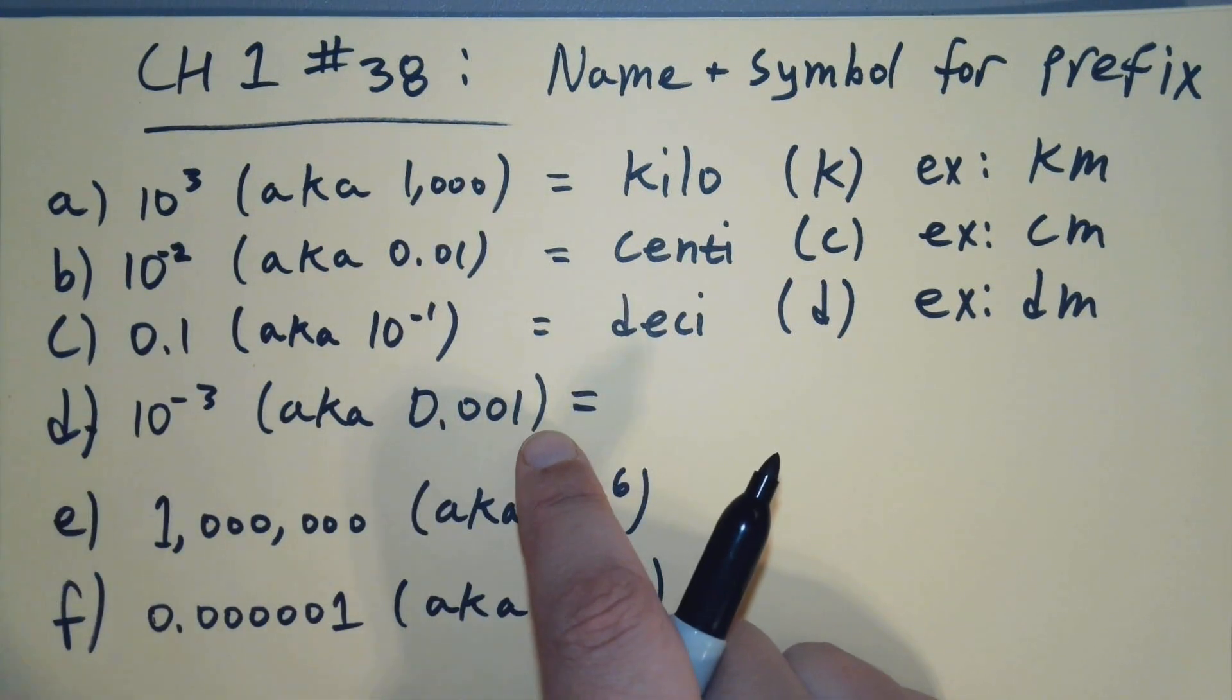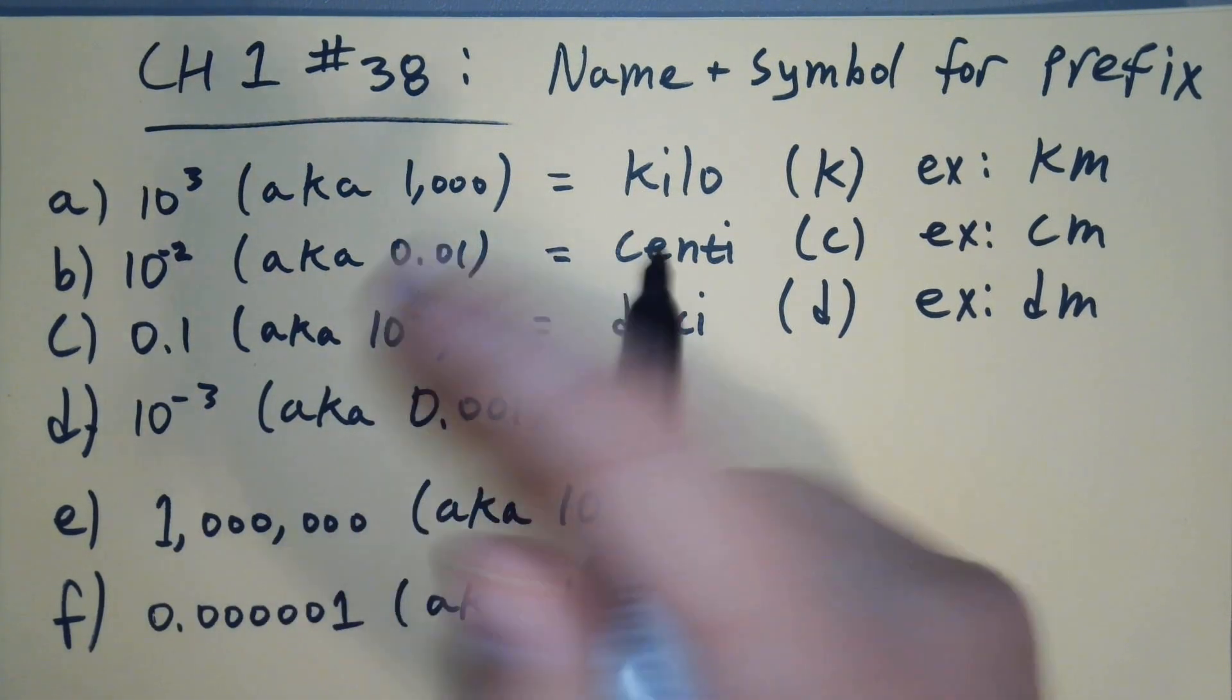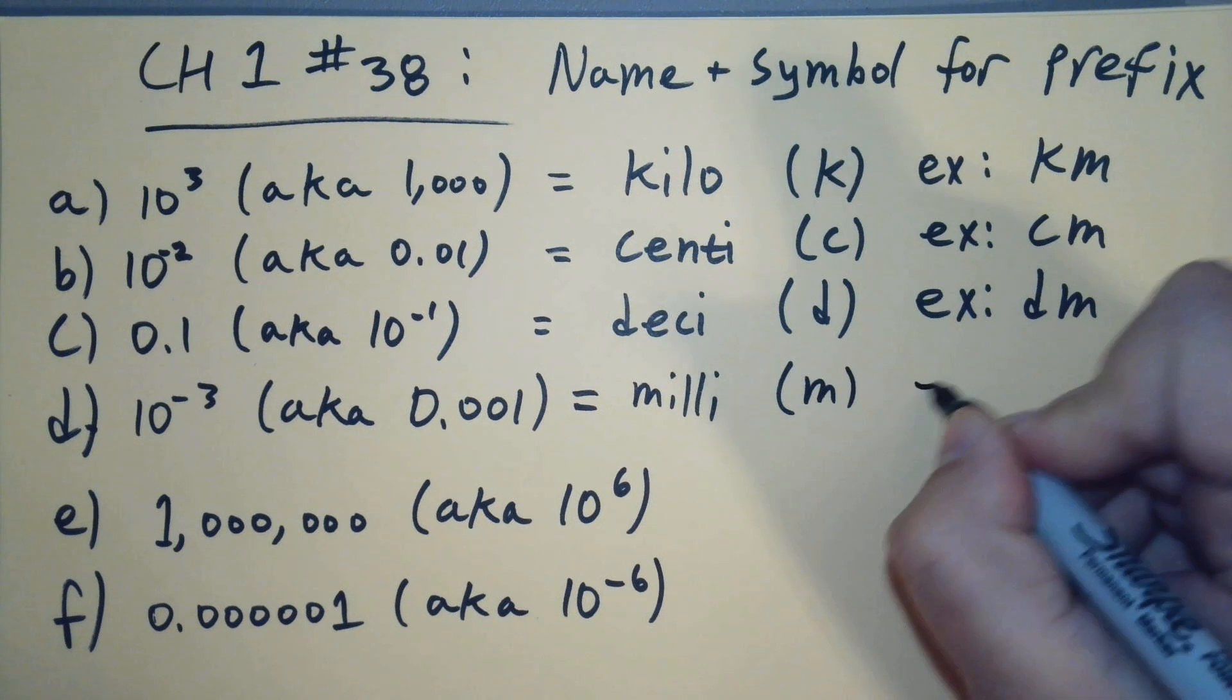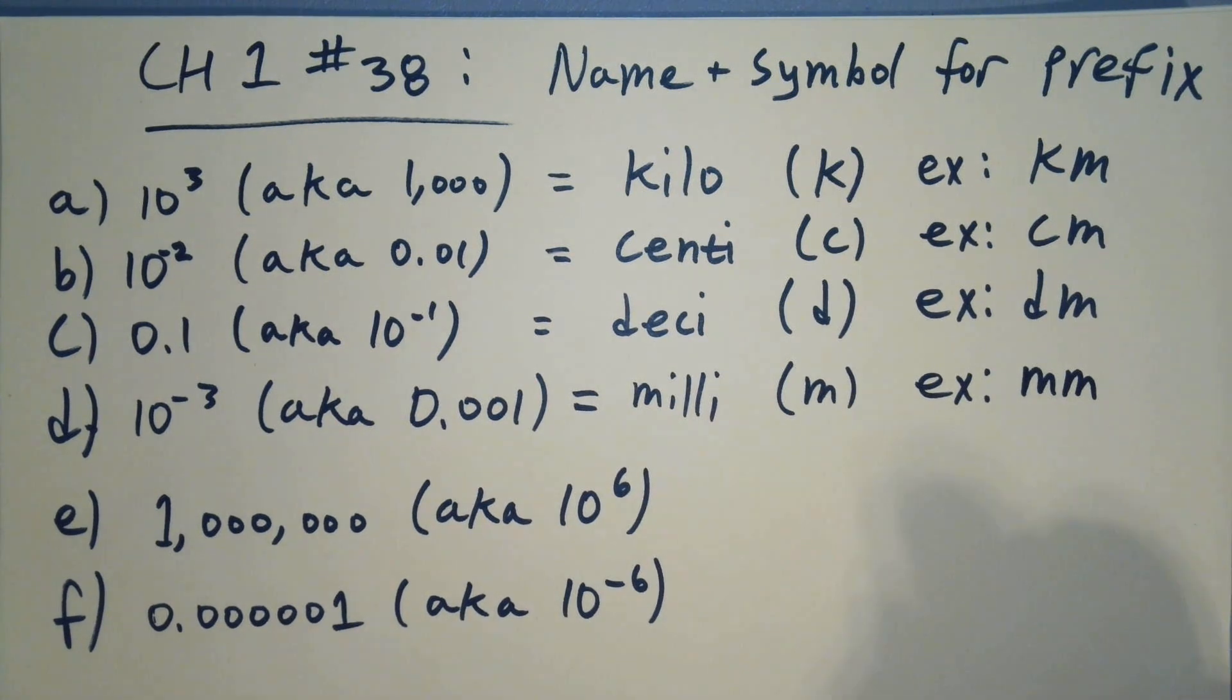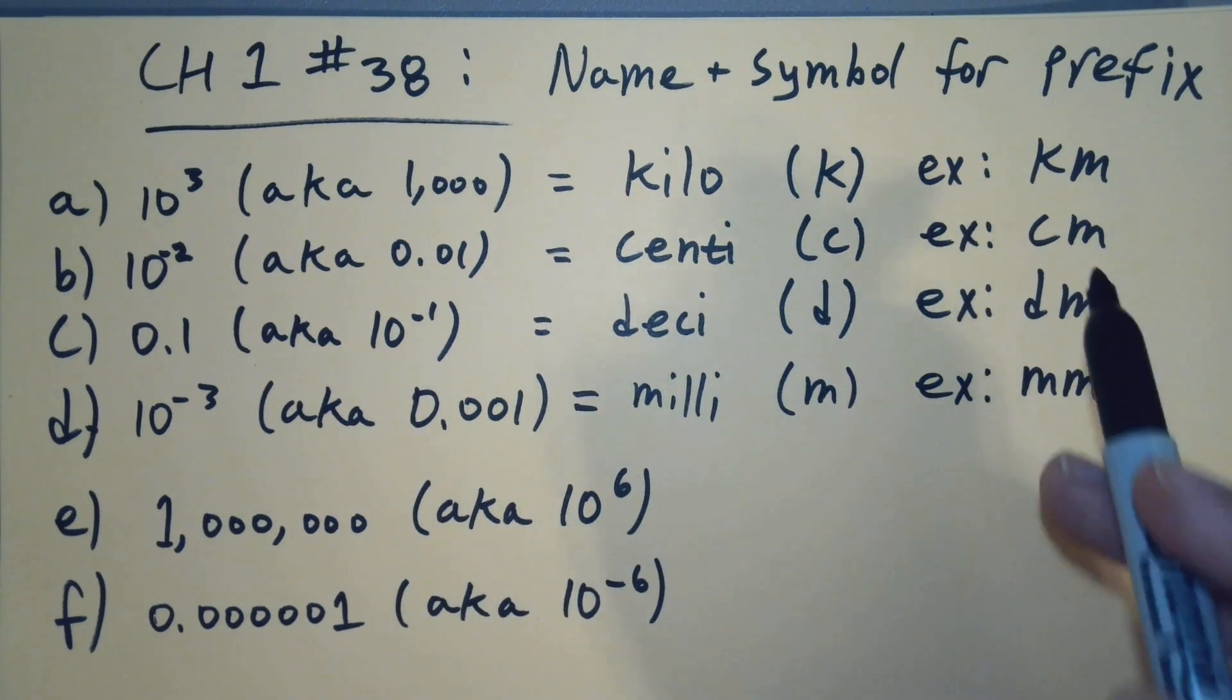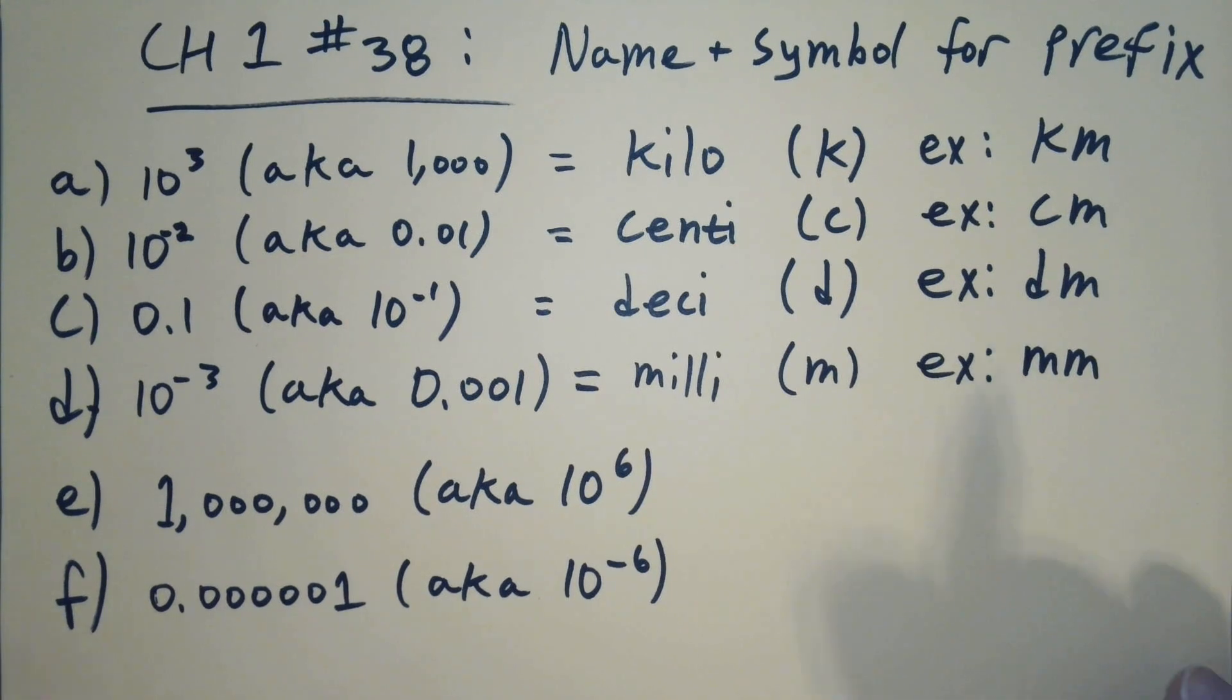So if we need 1,000 of something to equal our base unit, well that's a milli, and that's just a lowercase m. Our example here, sticking with meters as our base unit, would be a millimeter. So a centimeter is 1/100th of a meter, a millimeter is 1/1,000th of a meter. So there's 10 millimeters in every centimeter, you might notice that.